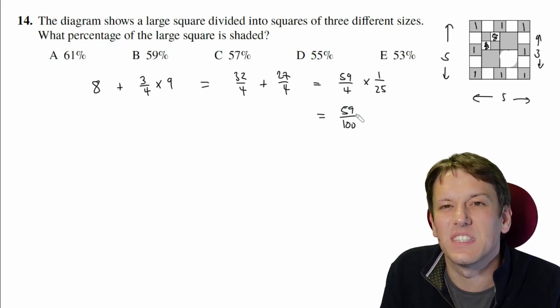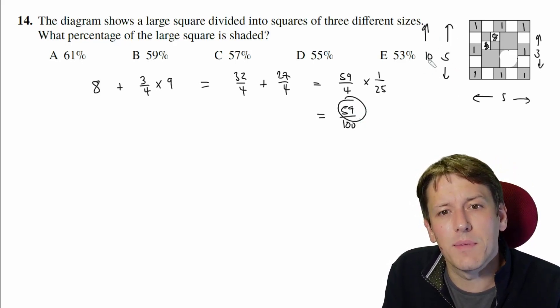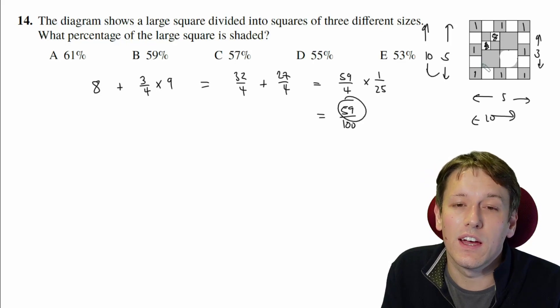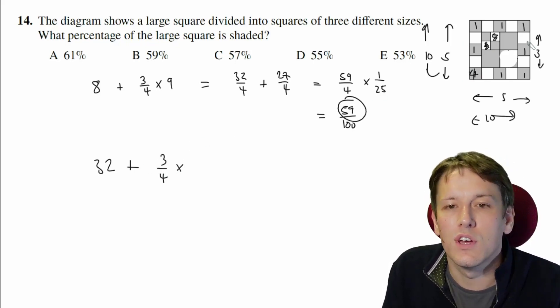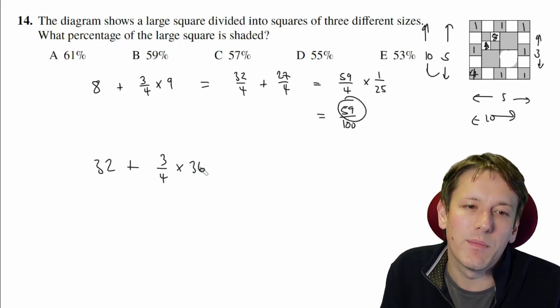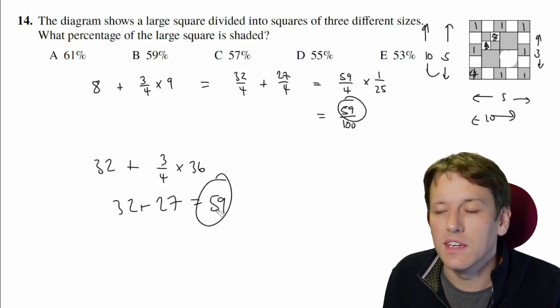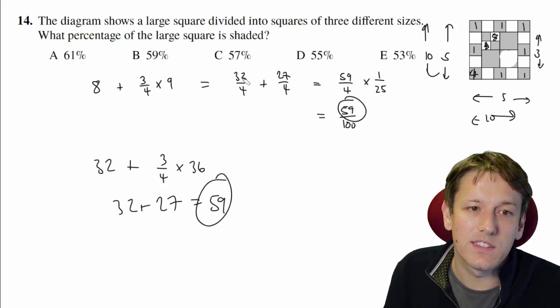Of course, if we'd started by making this a 10 by 10 square, we'd have just got that the area is 59 straight away. So that would also have been a good option. And we would have had eight two by, you know, these would now be four units squared that have been two by two squares. So we'd have got 32. And the middle part here would have been three quarters of a six by six, which is three quarters of 36, which gives us 32 plus 27, which is 59. So maybe actually making it a 10 by 10 square was useful there. But either way, we can get to the answer. And it's B, 59%.